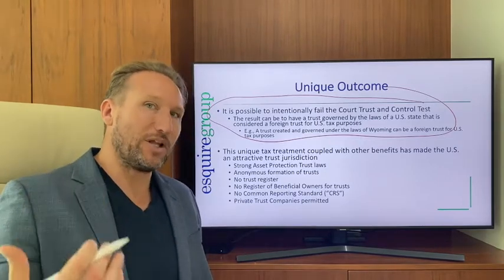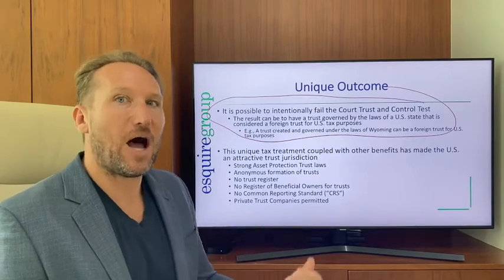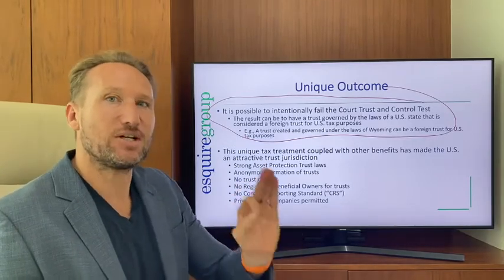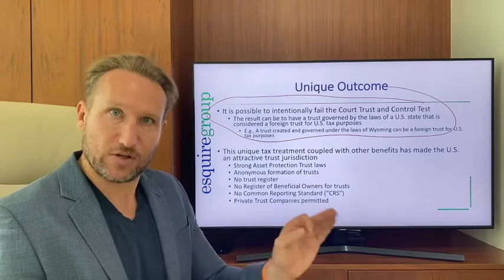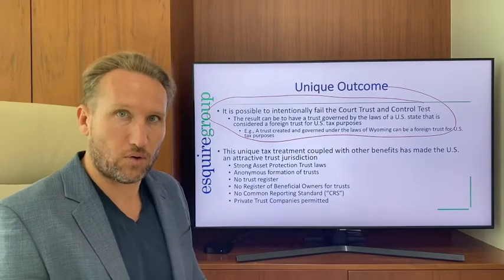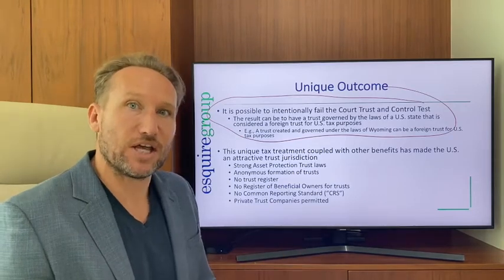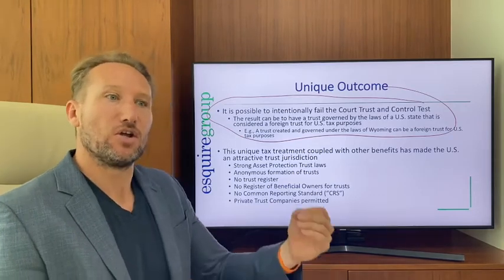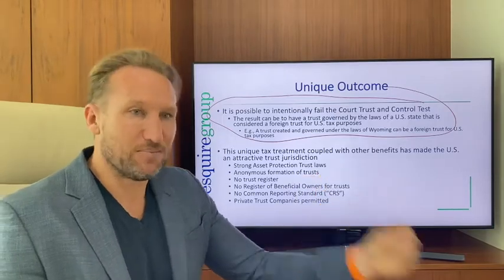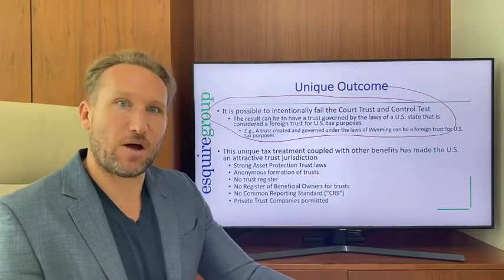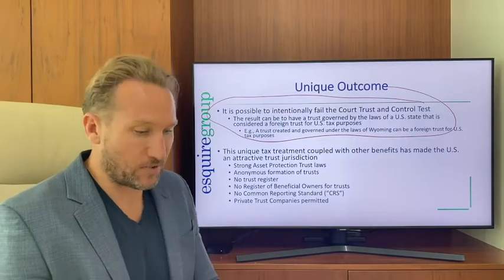What's really interesting is it's possible to intentionally fail one of those tests — either the control or the court test, or both. The result is that you intentionally create a trust that is domestic for state law purposes and foreign for tax purposes.